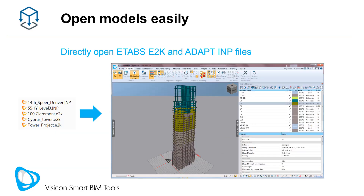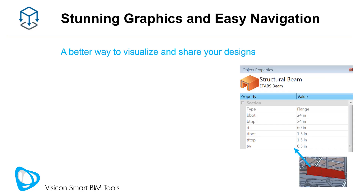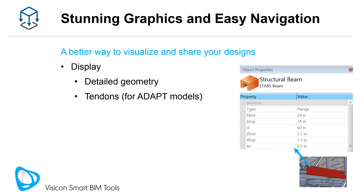To access your ETABs and ADAPT models, just open their respective E2K and INP files. At a minimum, Visicon offers a better way to visualize and share design models with stunning graphics and easy navigation. Visicon displays detailed geometry of your models, 3D tendons if you use ADAPT Builder, loads, and all component properties.